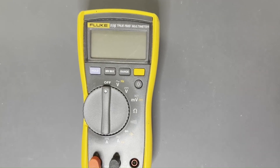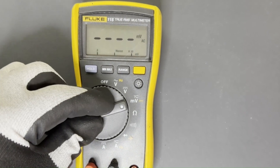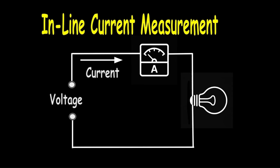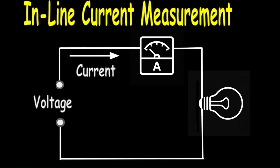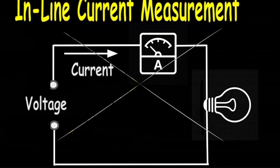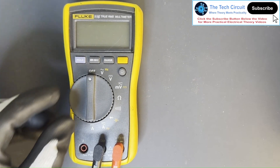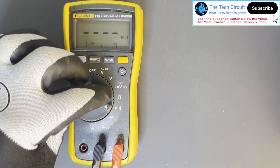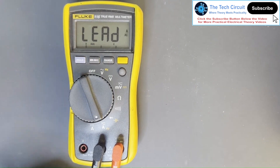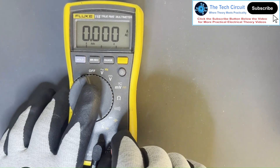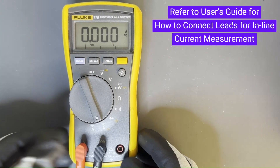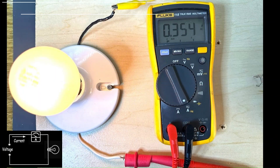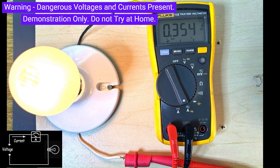Measuring AC current in line. Some meters don't have a clamp, but still allow you to measure current in the traditional way — by placing the meter in line with the current flow so that the meter can measure how much current is flowing through it. To measure AC current with this method, turn the dial on this Fluke meter to the AC current mode as designated by the A and the AC symbol. You must take the red lead out of the voltage measurement plug and place it in the amp measurement plug. Here's an example of a Fluke multimeter measuring current in line to determine how many amps it takes to operate this light bulb.